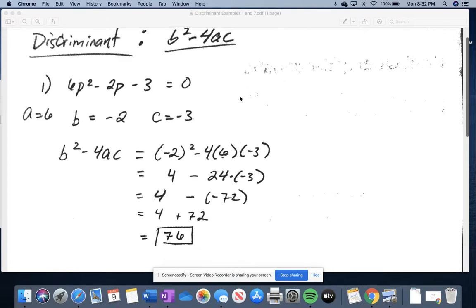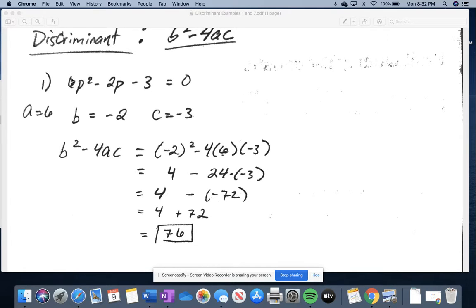So the first thing before you do any of these, the quadratic equation that you're given needs to be equal to zero. So for number one, it's already equal to zero, so we don't need to do anything with that.